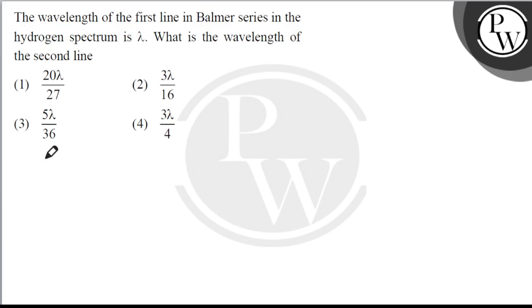As we know, Balmer series is given by 1 upon lambda is equal to R into 1 upon 2 square minus 1 upon n square. N key value for the first line is 3.